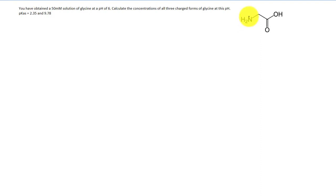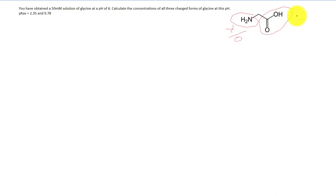Looking at glycine, we have two groups — the amino group and the carboxy group — that are both titratable, meaning they can change their protonation states. The NH2 group is either positive when protonated or neutral when deprotonated. The carboxy group when fully protonated is neutral, and when deprotonated it becomes negative. Glycine does not have a charged side chain — just a simple hydrogen — which gives glycine some interesting properties regarding secondary structures.